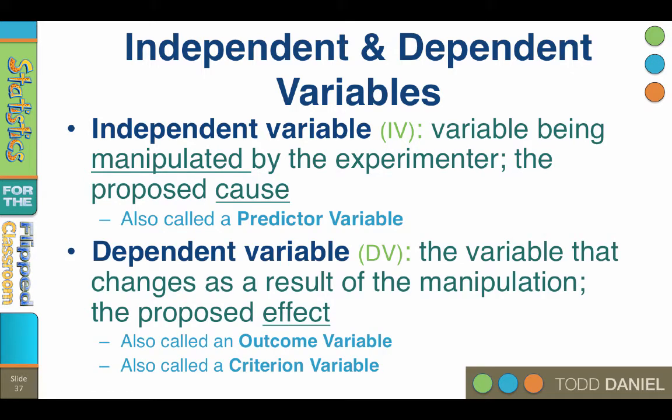The dependent variable, or the DV, is the variable that changes as the result of manipulation. It is the proposed effect, also known as the outcome or criteria variable. In our study, the DV would be how quickly the rats completed the maze, measured in seconds.